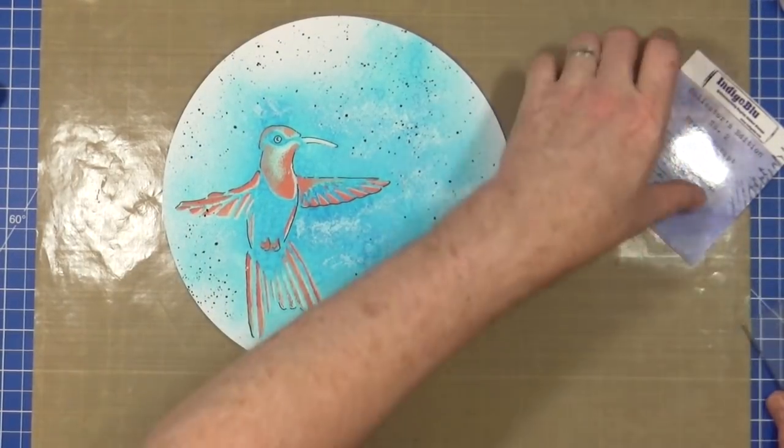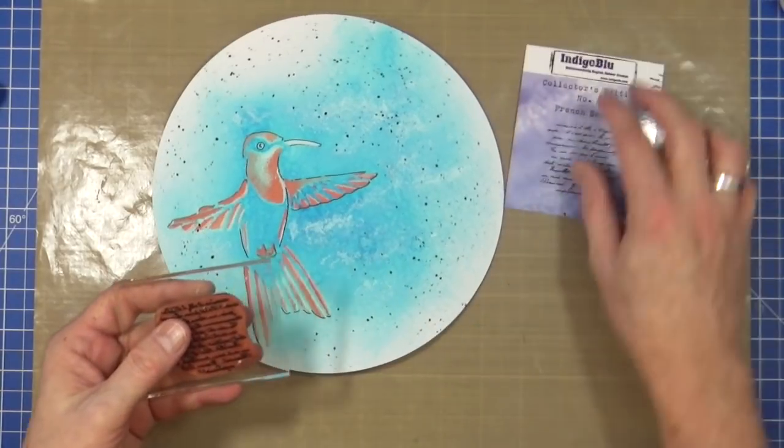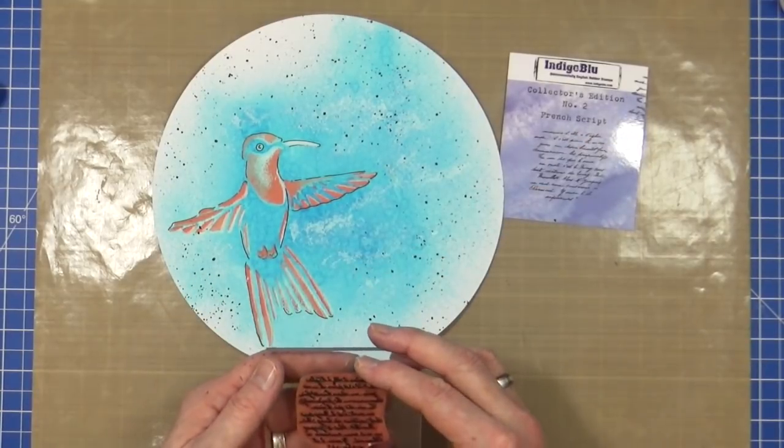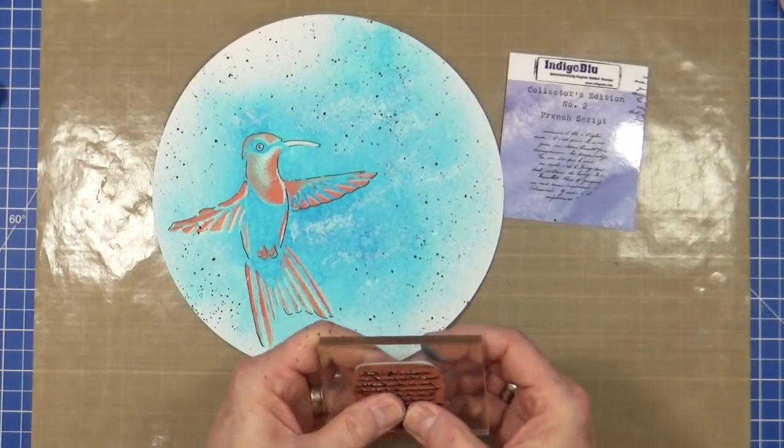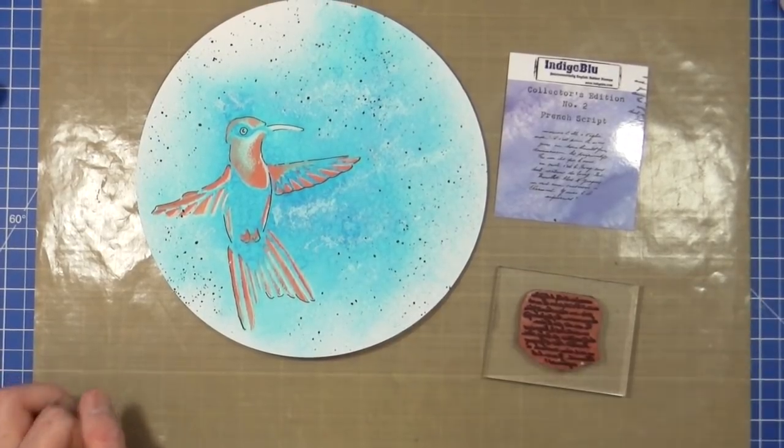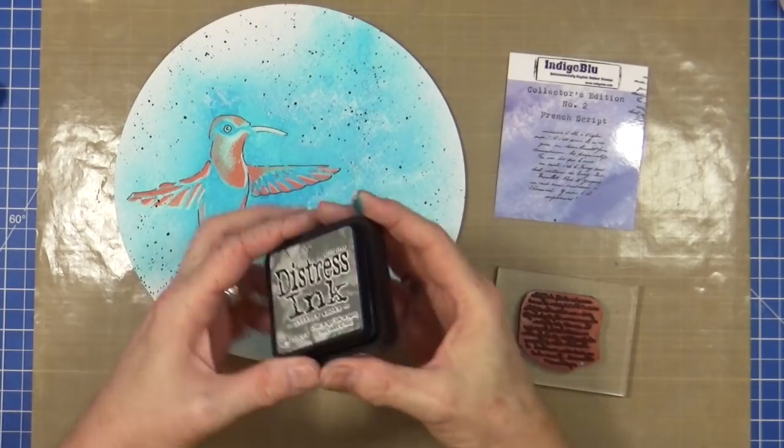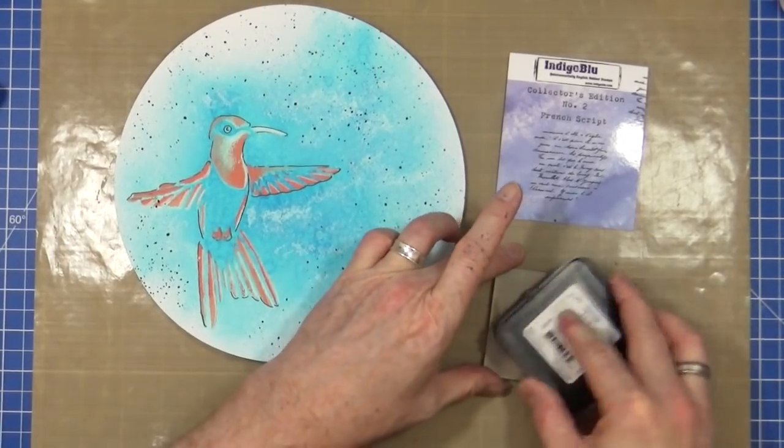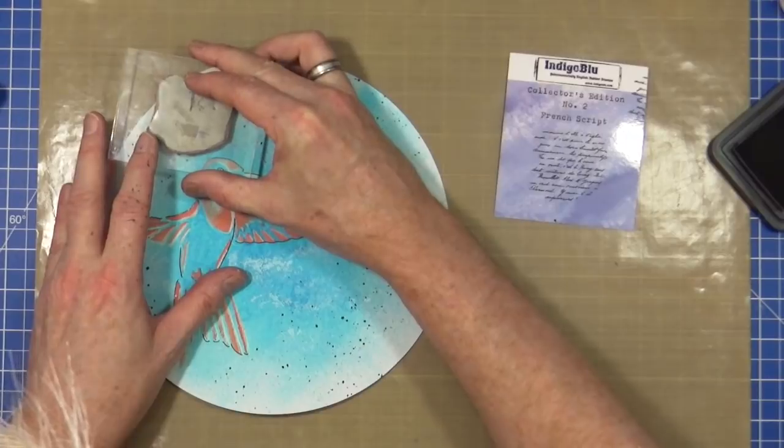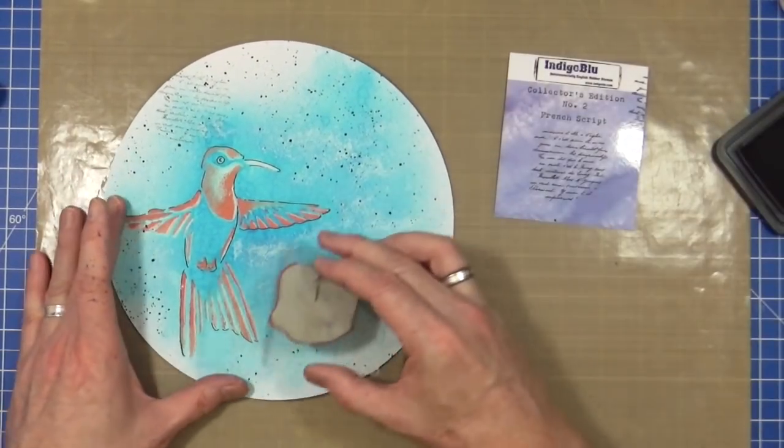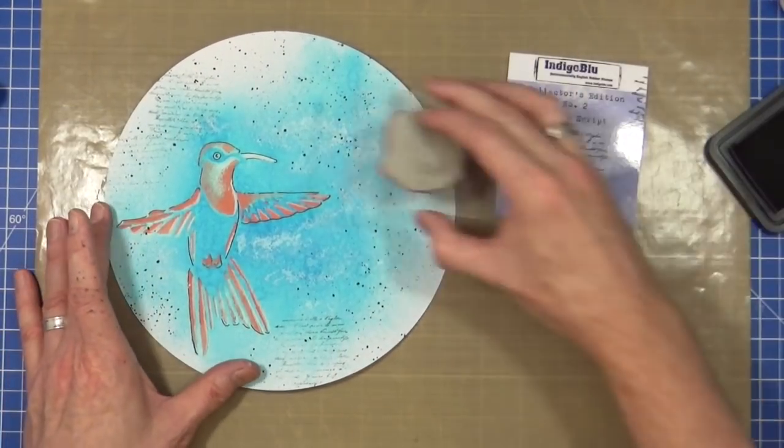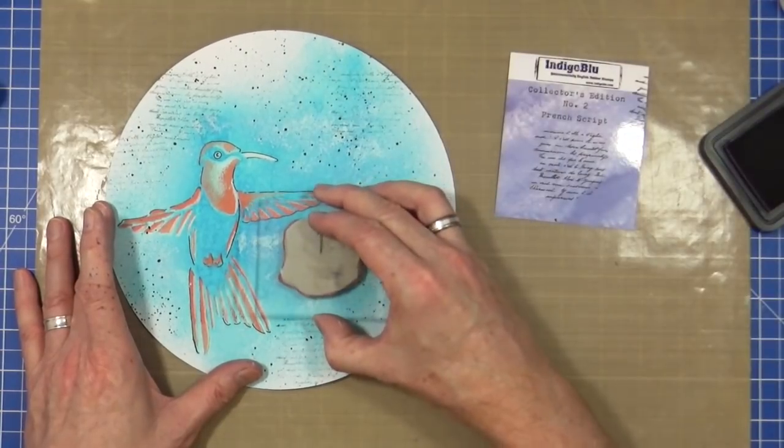Right. So I've got, I want to add a little bit of script into there now. So I've got a mini stamp from Indigo Blue Collectors Edition No. 2 French script. So again, just to break up that kind of background, I want to do just like a grey, a little bit of subtle stamping in the background. So I've got Hickory Smoke, which is a bit of a grey colour. I'm just going to add a little bit of that, just kind of around the page.